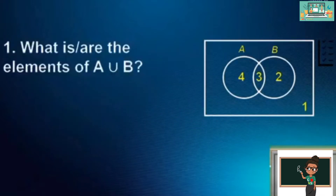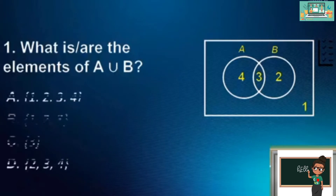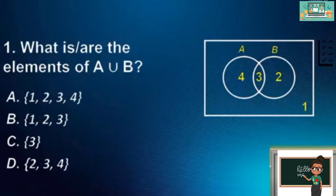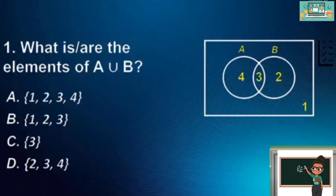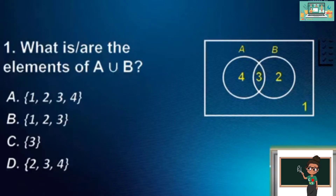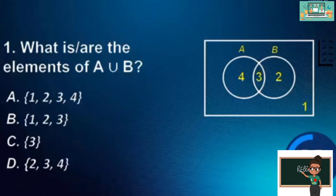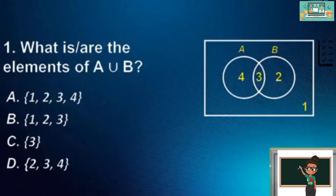Number 1. What is or are the elements of A union B? A. {1, 2, 3, 4}. B. {1, 2, 3}. C. {3}. D. {2, 3, 4}. The answer is letter D.